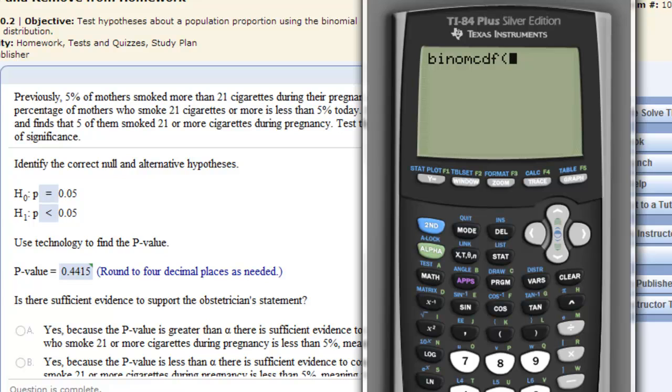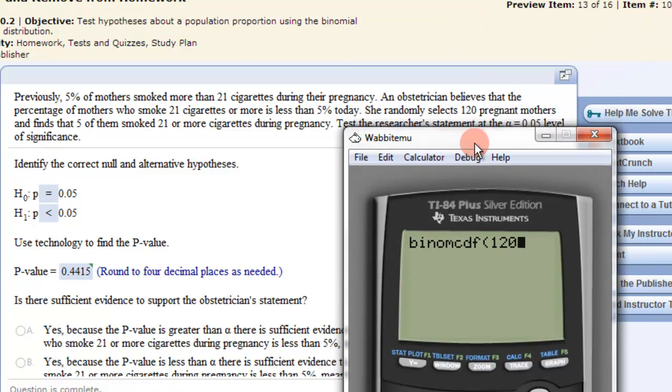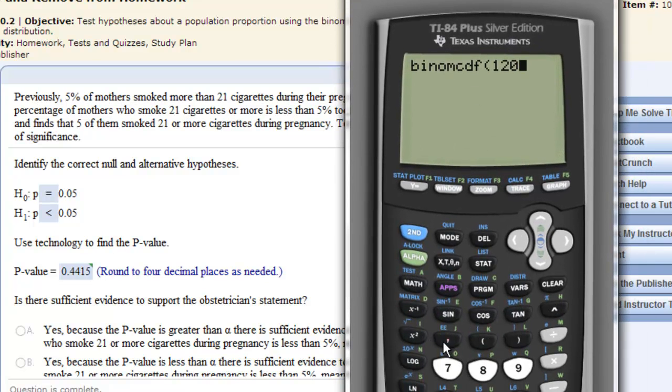Then we enter the values n, p0, and then our x-value. So our n, in this case, is 120, I believe. I'll remove that there. Do a comma. This is the comma. Our p, our probability, p0, .05, comma.